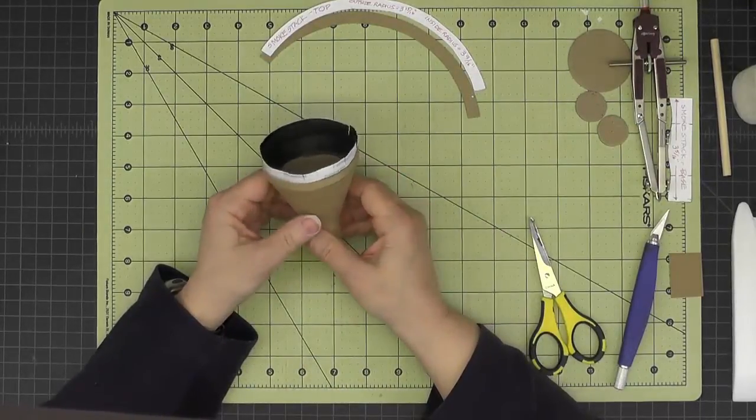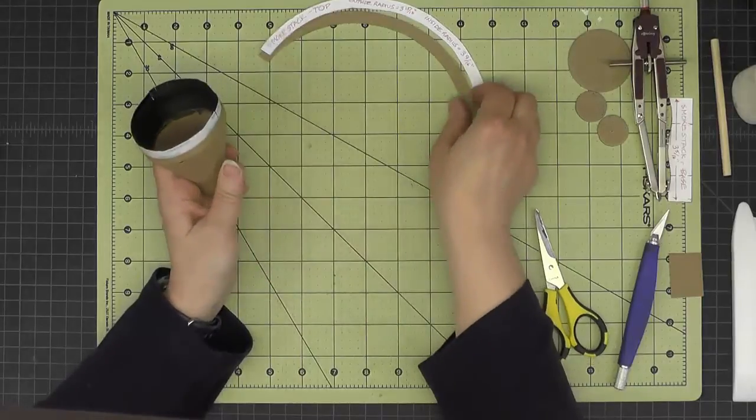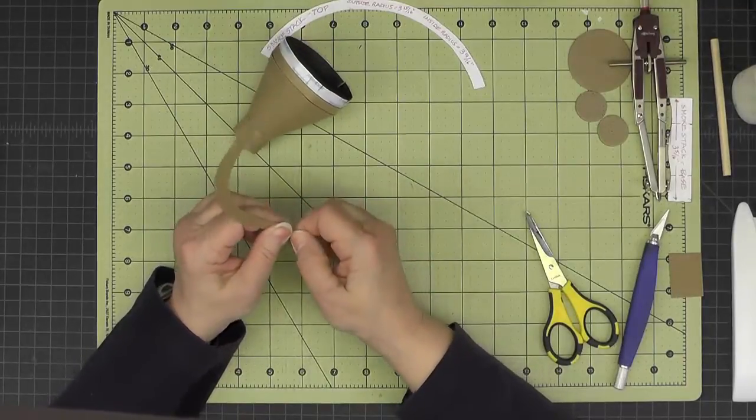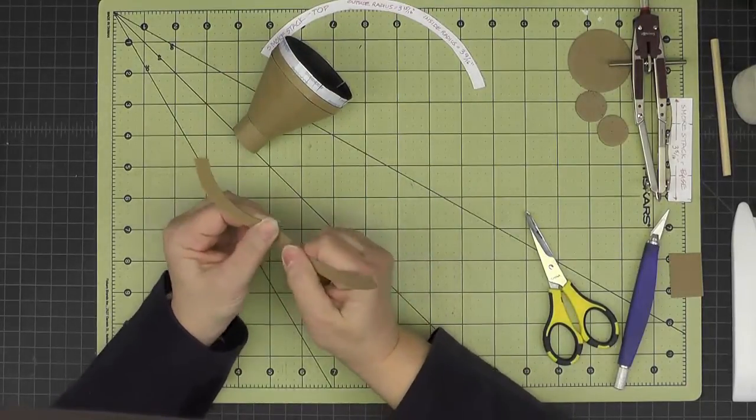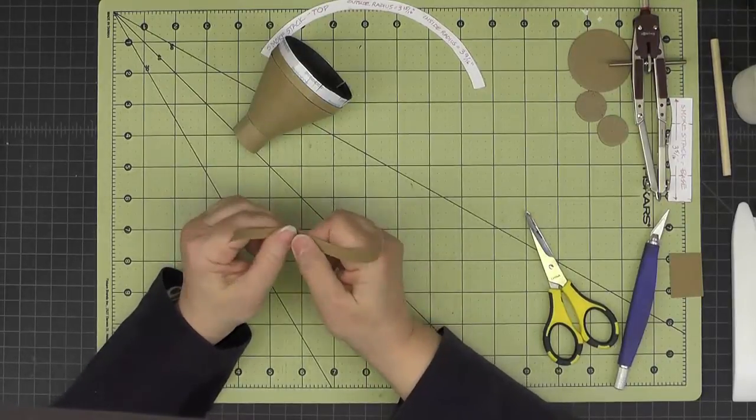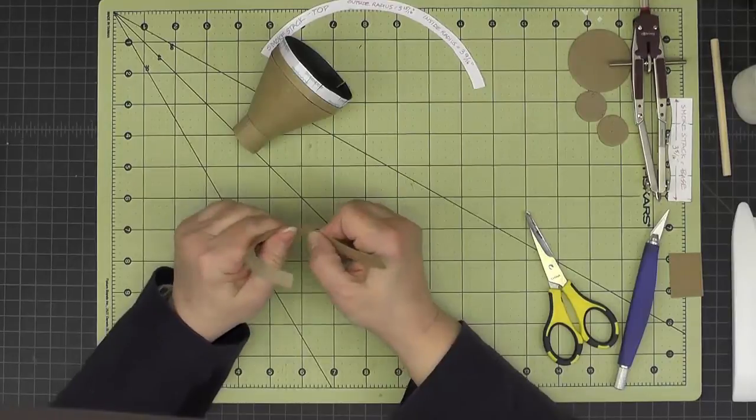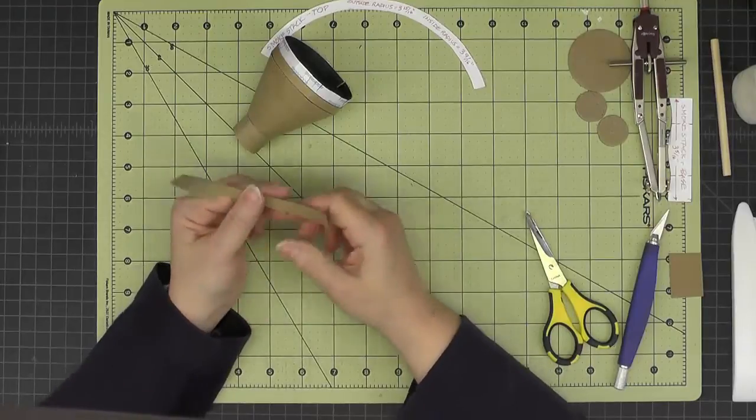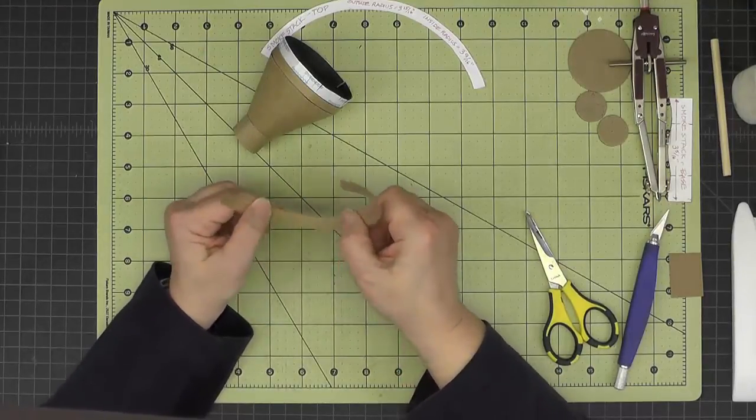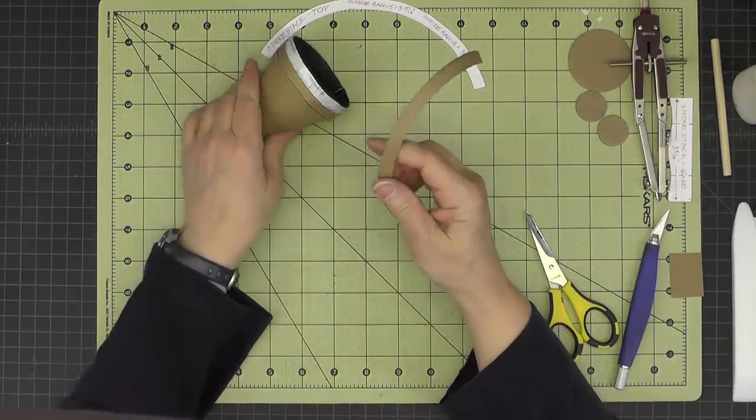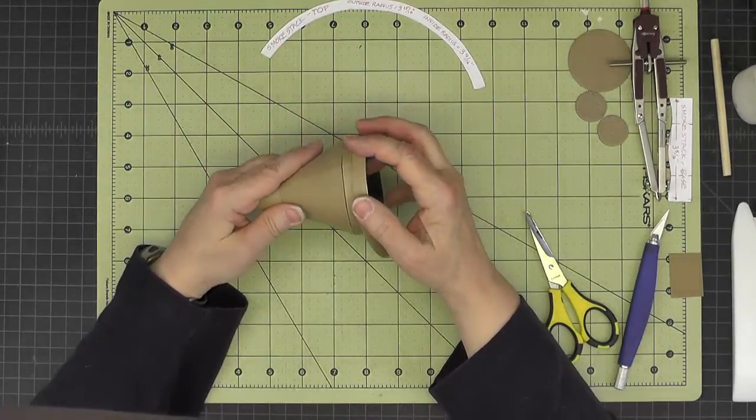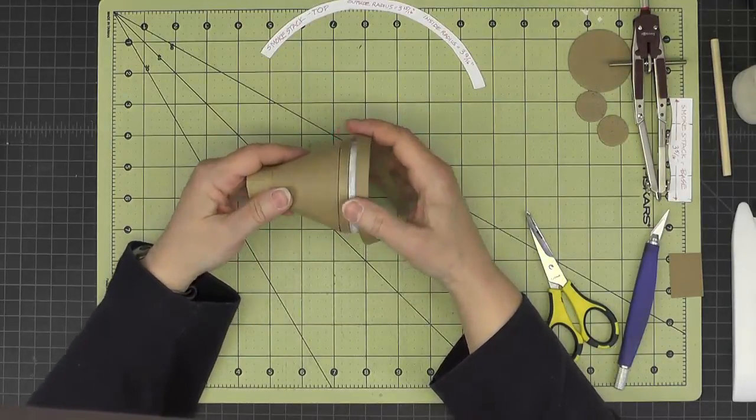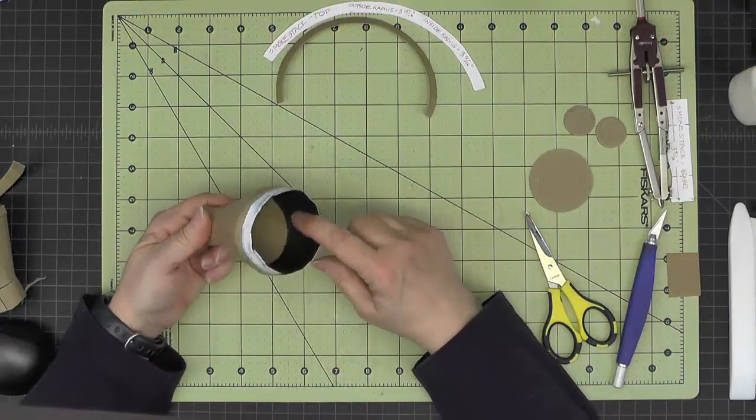So I gave that a good burnish. And now we're ready to attach our very top piece. And first I'm just going to train it to curve around a little bit. Now the outside of this is what gets attached to the smokestack so that it ends up coming slanting in. Hopefully you can kind of get the idea there. So I've given this a good burnish on the inside.